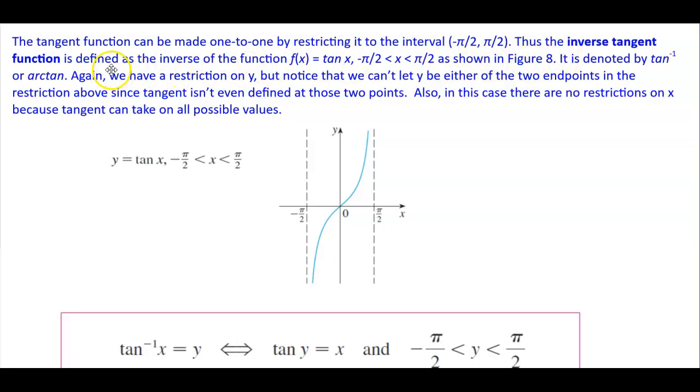Thus the inverse tangent function is defined as the inverse of the function f of x, which is equal to the tangent of x, where x is in between negative pi over 2 and pi over 2 as shown in Figure 8. It is denoted by tangent inverse or arctangent.